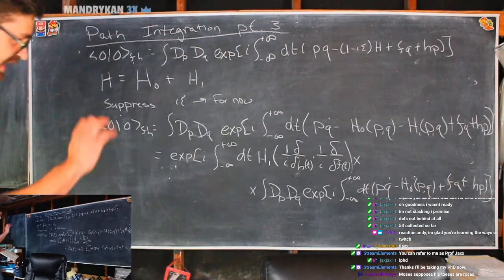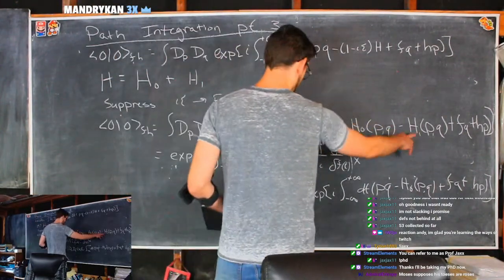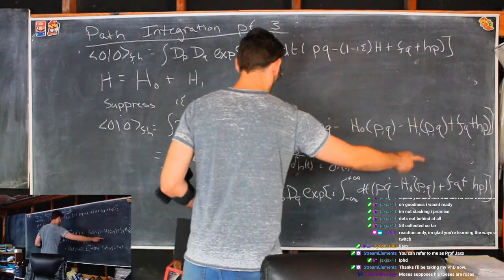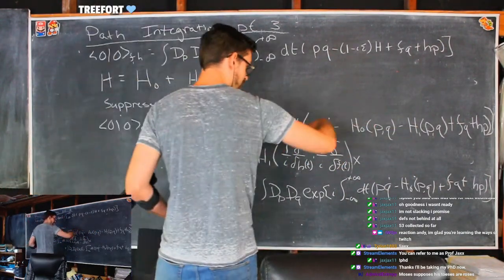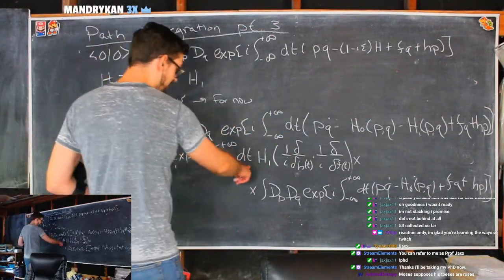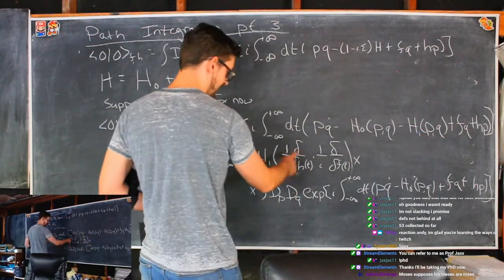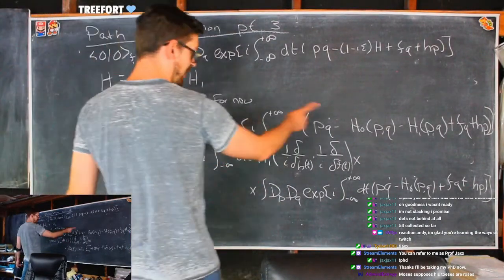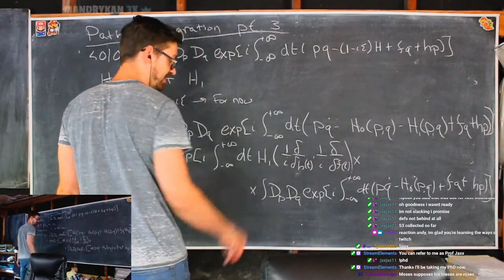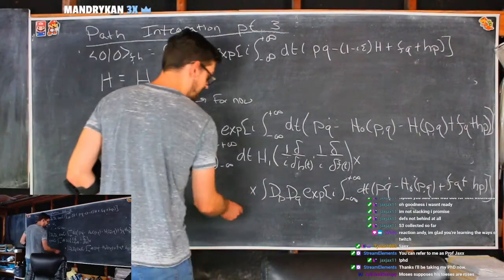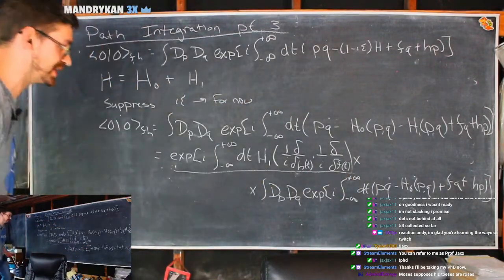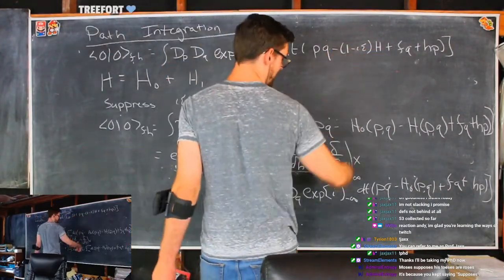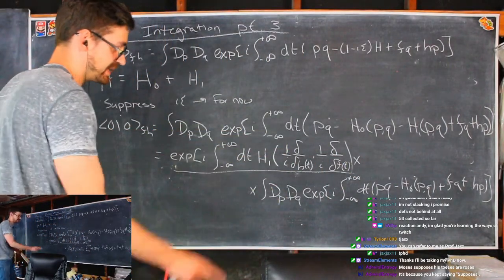Now we have the exponential of our Hamiltonian inside the action. We can pull the perturbation term out front — any additions in the exponent can be rewritten as a product of exponentials. So we can change our variables from P and Q to the functional derivatives of H and F, simply because we can form whatever perturbation we need. We now have two separate things: the exponent of the perturbation, and the original path integral with just the solvable Hamiltonian with eigenvalues.